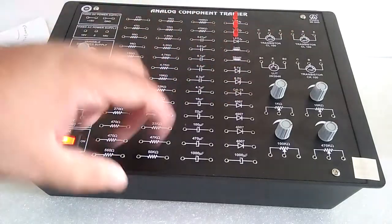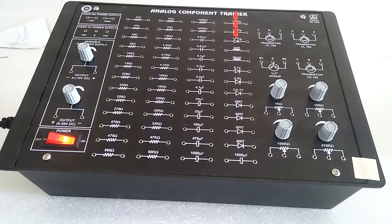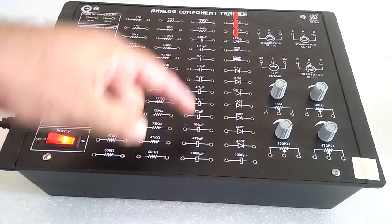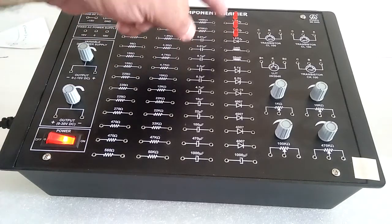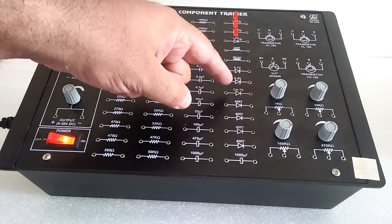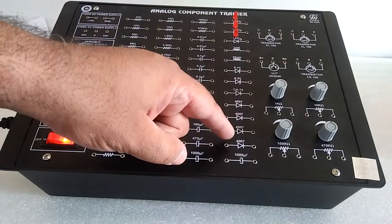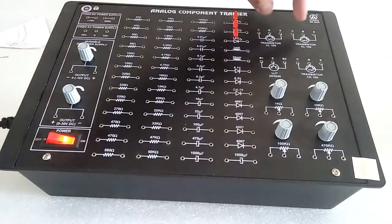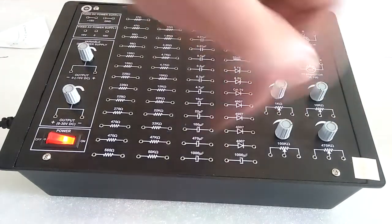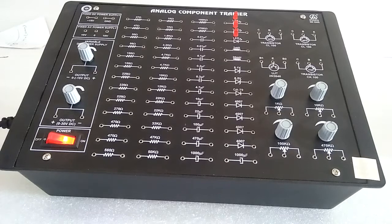Here are resistances of different values, capacitance, LEDs, inductance, zener diodes, IN4007 diode, and here is the transistor UJT, potentiometer of different values circuit. We can perform different experiments as per the manual.